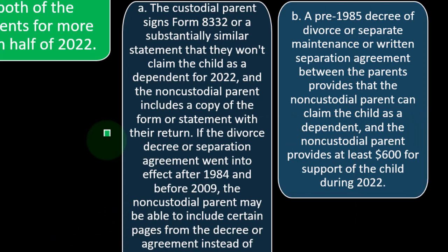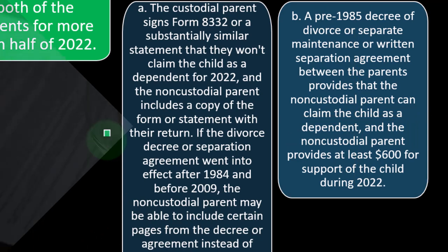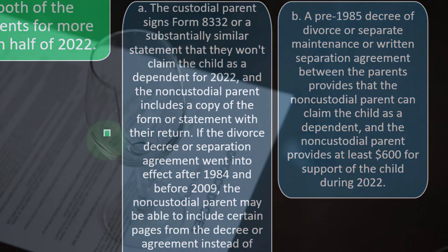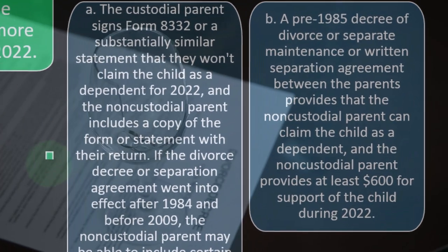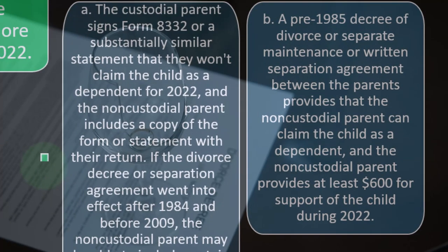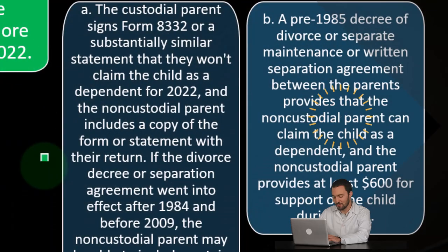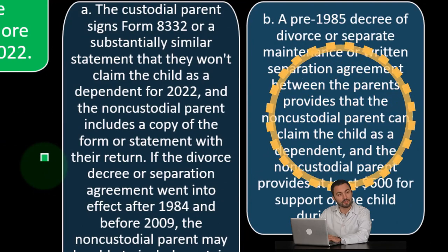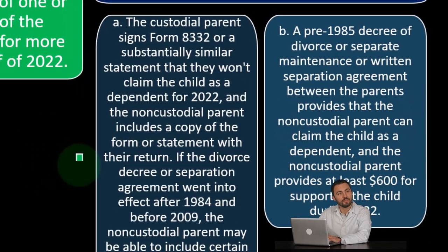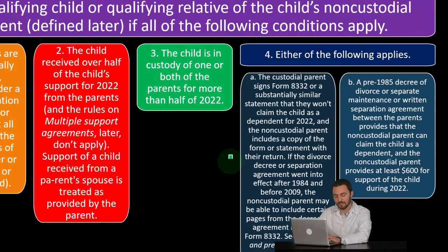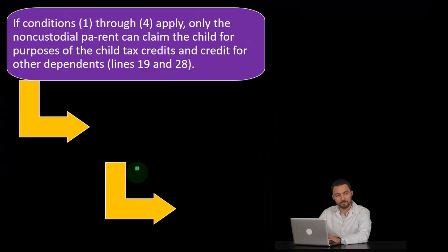Option B: a pre-1985 decree of divorce or separation maintenance or written separation agreement between the parents provides that the non-custodial parent can claim the child as a dependent, and the non-custodial parent provides at least $600 for support of the child during 2022.